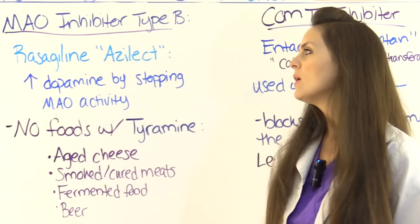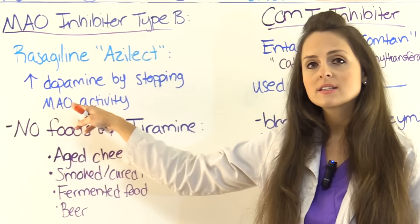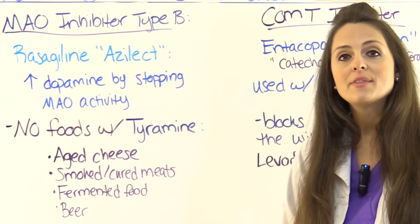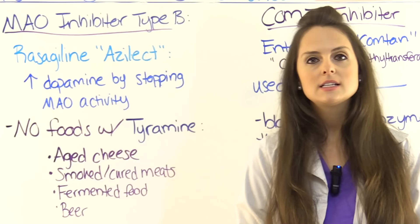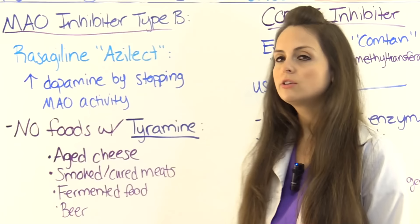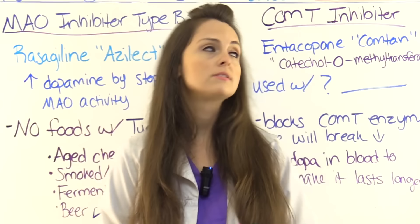Other drugs used to treat Parkinson's disease include monoamine oxidase inhibitors type B — a popular one is rasagiline, also known as Azilect. It increases dopamine by stopping monoamine oxidase activity, giving you improvement of those signs and symptoms. An important teaching point: with any monoamine oxidase inhibitor, the patient should not ingest foods high in tyramine — this includes aged cheese, smoked or cured meats, fermented foods, and beer. The patient should definitely limit those in their diet.